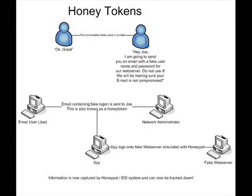Now on to honey tokens. A great example of a honey token would be in a large corporation. In a large corporation, you might have a network administrator and an employee. They would exchange a conversation outside of email. The network administrator might say, "Hey Joe, I'm going to send you an email with a fake username and password for our web server. Please don't use it. We're going to be making sure that your email is not compromised." If someone uses this information to log in, we're going to know that it wasn't you, and we're also going to know that your email is compromised. Now that we know that your email is compromised, the honeypot that they logged into, which would be the fake server running on the IDS, is going to record all of that person's information. We'll be able to capture that person and know that your email is now safe. All that a honey token really is, is bait for a honeypot, so that a person's information can be captured if something like an email is compromised.